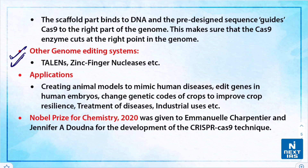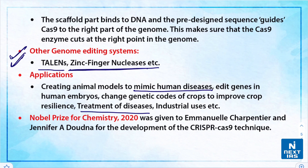There are also other genome editing systems like TALENs and zinc finger nucleases. In terms of applications, CRISPR Cas9 can be used to create animal models to mimic human diseases, edit genes in human embryos, change the genetic codes of crops to improve resilience, treat diseases, and for industrial uses. The Nobel Prize for Chemistry in 2020 was awarded to Emmanuelle Charpentier and Jennifer Doudna for the development of the CRISPR Cas9 technique.